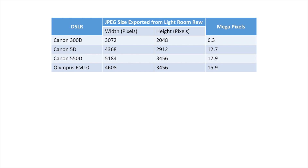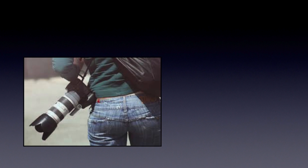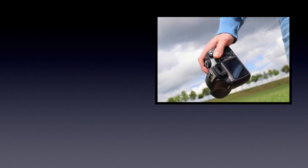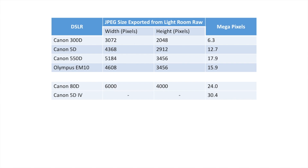The Canon 300D is six point three megapixels, the Canon 5D is twelve point seven, the Canon 550D is seventeen point nine, and the Micro Four Thirds Olympus EM10 is fifteen point nine. For those of you thinking about newer modern cameras — there are a whole plethora available. I'm a Canon and Micro Four Thirds shooter, so I've looked at the newest Canons. The Canon 80D can produce a top image size of six thousand by four thousand pixels, which equates to a twenty-four megapixel image.